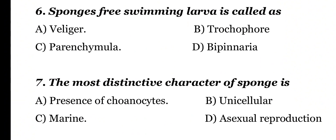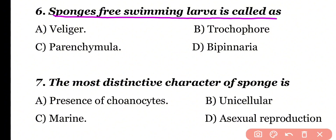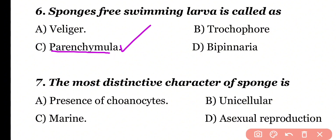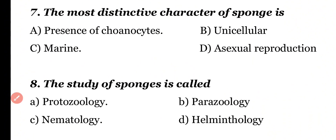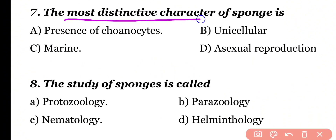Question number 6. Sponges' free swimming larva is called: veliger larva, trochophore larva, parenchymula larva, or bipinnaria larva. Correct answer is option C. The free swimming larva of sponges is known as parenchymula larva. Question number 7. The most distinctive character of sponges is: presence of choanocytes, unicellular, they are marine, or asexual reproduction. Correct answer is option A. The most distinctive character of sponges is the presence of collar cells or choanocytes.